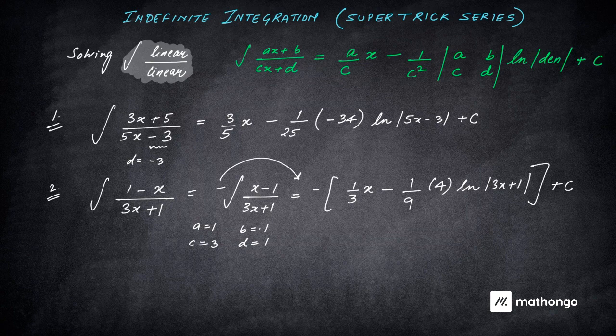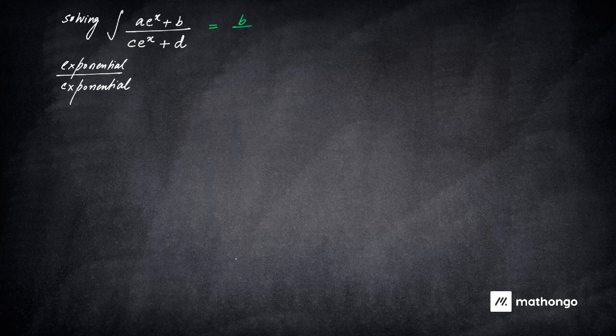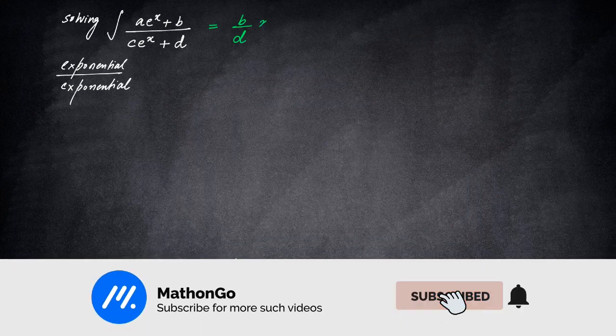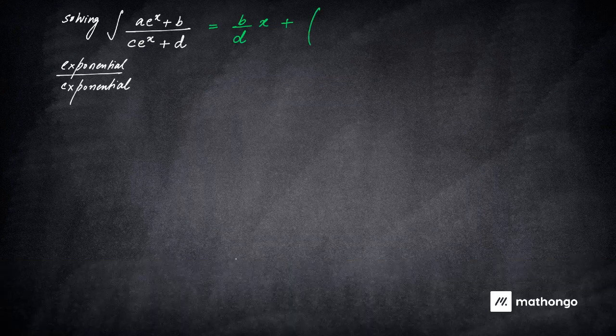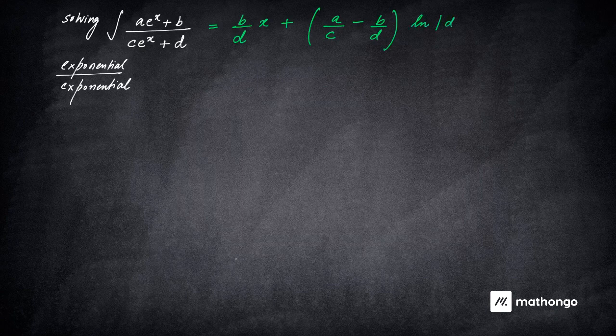See how easy the problem becomes and how quickly you can solve questions in linear by linear form. Now let us look at a beautiful formula for the exponential by exponential form. For linear by linear we used a by c times x; for exponential by exponential we use b by d times x. Then with a negative sign we write a by c minus b by d, and simply put ln mod of the denominator function plus C. That's it.